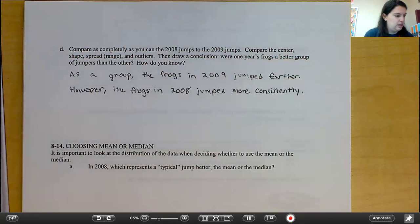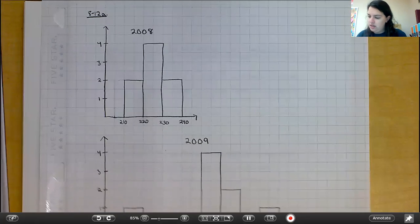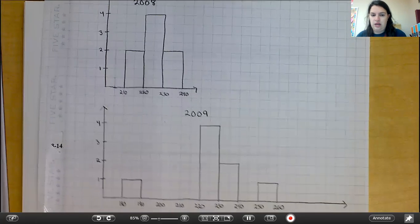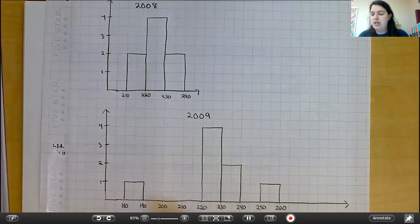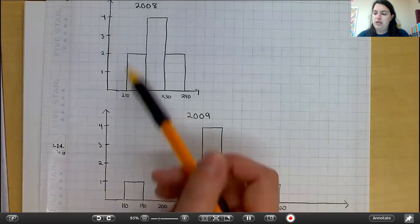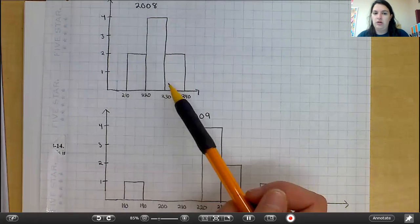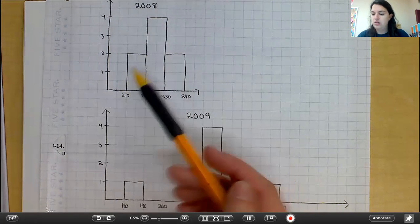And we can see that from our histogram here. Yes, in 2009, they jumped further because most of their data is out here. But we have this big gap in the middle. Whereas in 2008, our histogram is all kind of right in the center with one peak. So, that is your 812 lesson.